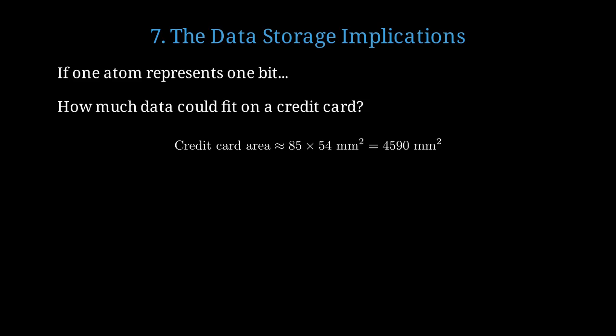A credit card is about 85 by 54 millimeters, giving us 4590 square millimeters of area. If we space atoms about 0.3 nanometers apart in a grid, we can fit about 280 million atoms along one side of the card. Squaring that gives us about 10 to the 17th atoms total, or 100 quadrillion bits.